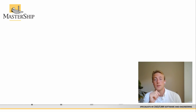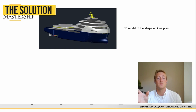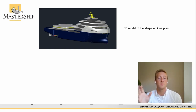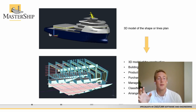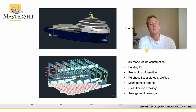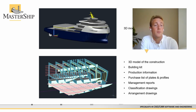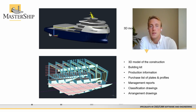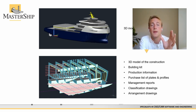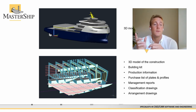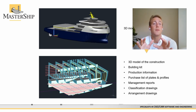So what can our software do for your company? It can help you translate a 3D surface model or a lines plan into a 3D model of the construction. When you have modeled the 3D construction, you can add production information to it — and this production information really makes it valuable. You can add marking lines, bending lines, treatment information, logistics information, and a unique plate ID to each part. Combining the 3D model with production information, you can send it to a cutting machine, and when it's cut you have in fact a building kit, which makes your production process a lot more efficient.